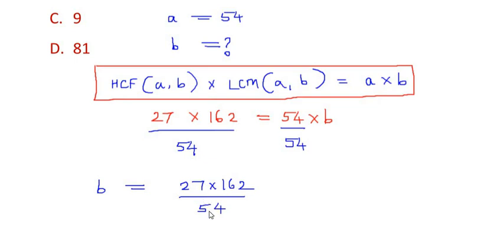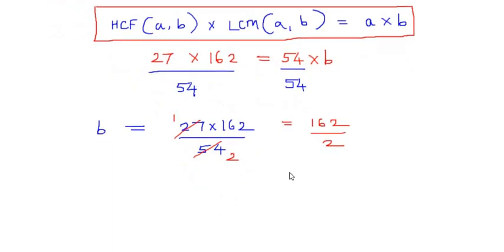Now 27 and 54 go in the table of 27. So 27 one time is 27 and 27 two times is 54. So we get it as 162 over 2, and we can further simplify this because these both go in the table of 2.